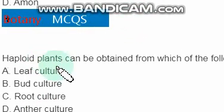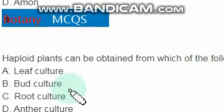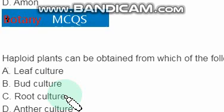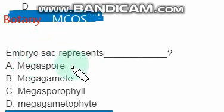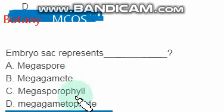Haploid plants can be obtained from which of the following? Not leaf culture, not bud culture, not root culture — the right option is anther culture. Haploid plants can be obtained from anther culture.